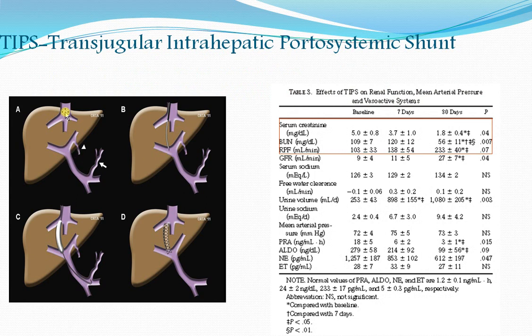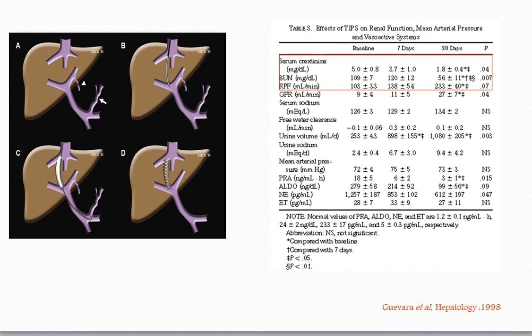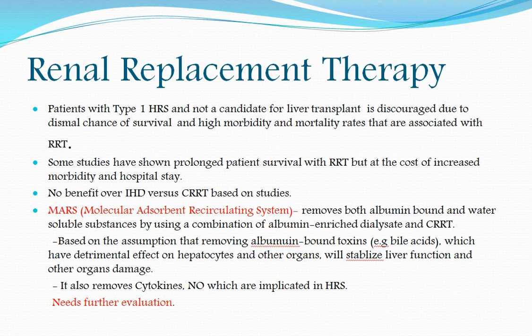For the TIPS procedure, a wire is inserted through the transjugular vein, advanced into the hepatic vein, and a stent is deployed to create a shunt. A study published in Hepatology in 1998 demonstrated the beneficial effects of TIPS in patients with hepatorenal syndrome.